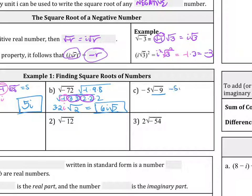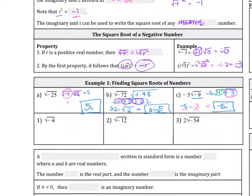Part C: negative 5 is on the outside, so we focus on negative 9 inside. That's negative 1 times 3 times 3. The 3 comes out, and the negative 1 becomes an I, so we have negative 5 times I times 3. Multiplying the numbers together gives negative 15I.